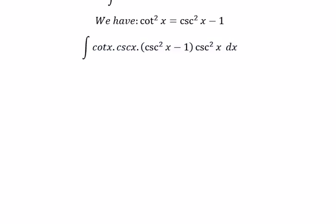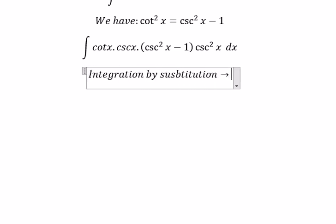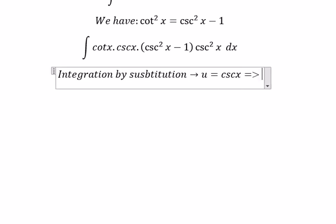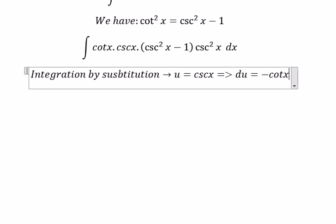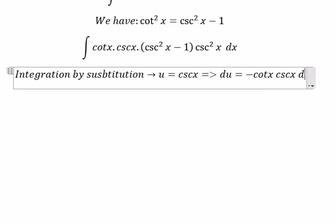And now we can use integration by substitution. We put about u equal to cosecant of x. We do first derivative, you got about du equal to negative cotangent x cosecant x dx.